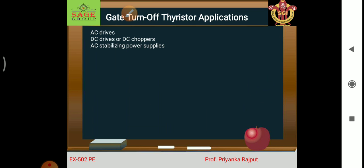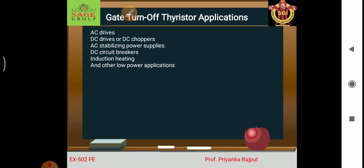GTO is also used for AC stabilizing power supplies, DC circuit breakers, induction heating, and other low power applications. Thank you so much — we will continue in the next lecture.